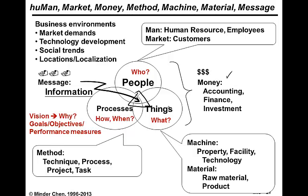Information plays a central role here to tie the people processing things together. So we will always know who has to do what, how to do it, and when to do it. And besides who, when, and what, sometimes we have to add where, because processes can be carried out in different places. People can be relocated in different places, and things can certainly be located in different places. The last is why — information can be used to document the business goal and objective, and eventually realize it as a performance measure.